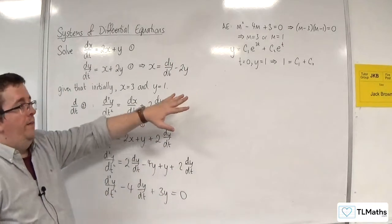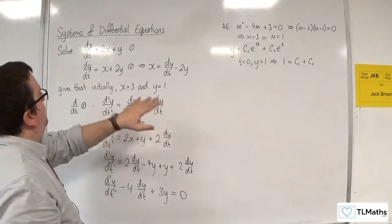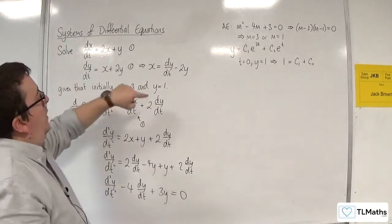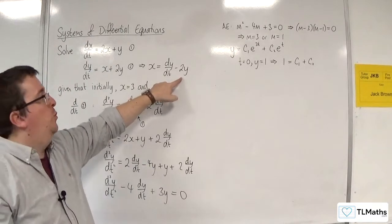I can't go any further than that, so now I'm going to have to think. I know that x is equal to dy by dt take away 2y.